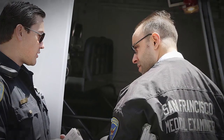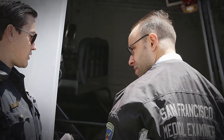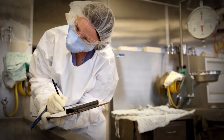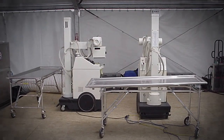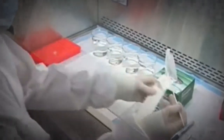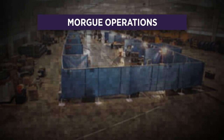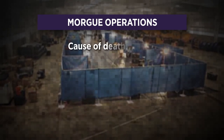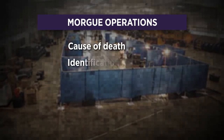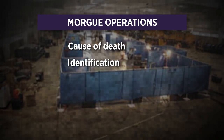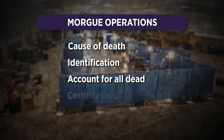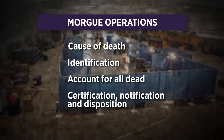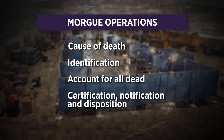The coroner determines the best option for morgue operations. The deceased must be properly identified using review tactics like dental examination, fingerprints, x-rays, and DNA analysis. The goals of the morgue operations are to document the cause of death, confirm the identity of the deceased, physically account for all dead related to the incident, and provide death certification, notification, and release for final disposition.